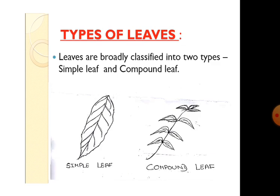Types of leaves. Leaves are broadly classified into two types: simple leaves and compound leaves. In a simple leaf, there is a single leaf blade or lamina, like in the case of mango, guava, and banana — they all have a simple leaf because they have a single leaf blade.